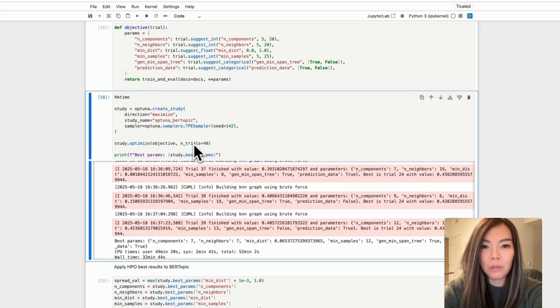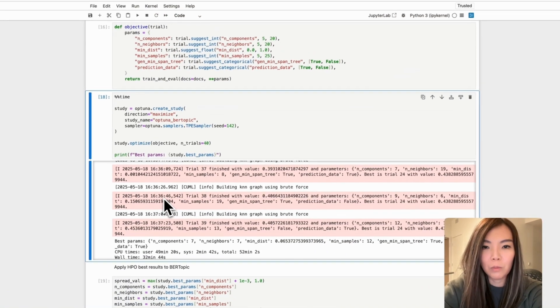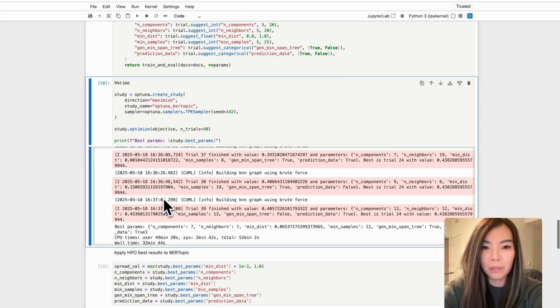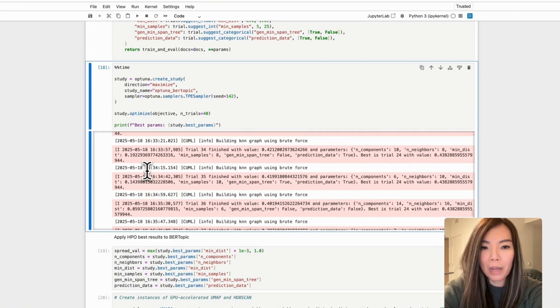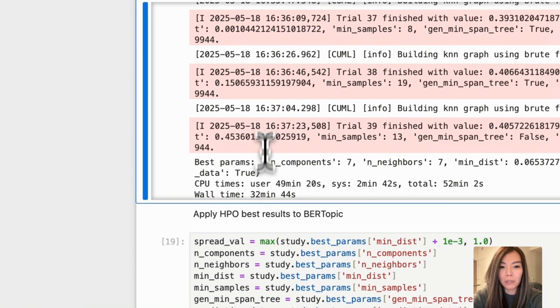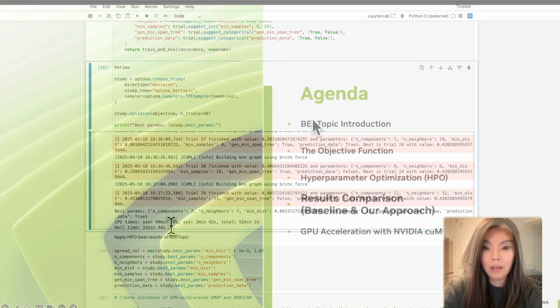In the final output, you can see that Optuna displays the best trial's parameters and corresponding scores. This provides us with the optimal settings for UMAP and HDBSCAN, which we can use to achieve the highest possible performance for our BERTopic clustering.